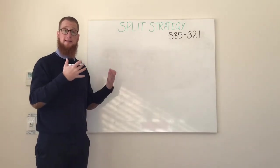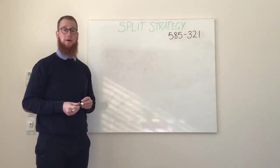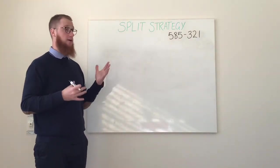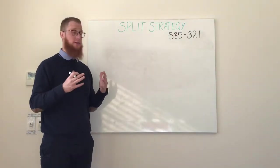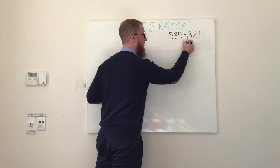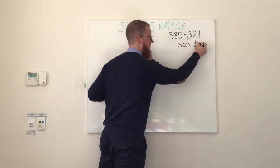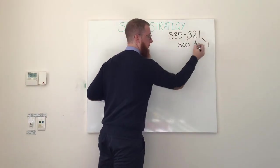First step is to find our subtrahend, which is the number that we are taking away, which is obviously going to be our 321. We can split that up into its place value parts: three hundreds, two tens, and one 1.